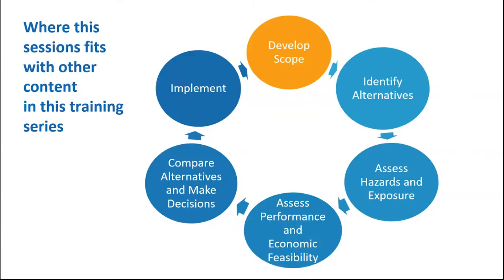This session outlines the critical first steps of an assessment of alternatives, which is developing the scope of the assessment. Each session in this training series is designed to build on the other, and in practice you may choose to conduct these elements in a different order. This schematic is a simple reminder of where we're headed in this training and how this session fits into the rest of the training series. It also illustrates a key philosophy that the assessment of alternatives is not intended to be a linear process, but rather one that can be revisited and revised as new information and new strategies emerge.